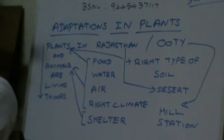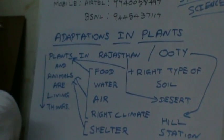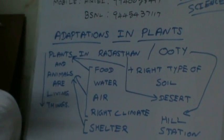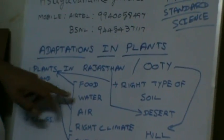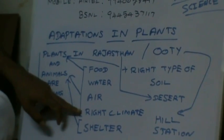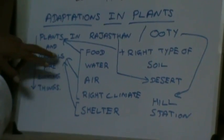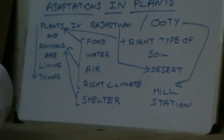Plants and animals are living things. Both need lot of inputs to survive. If you take plant, plants and animals both require some type of food, water, air, and a right climate. And for animals, in addition to this, a shelter is required.